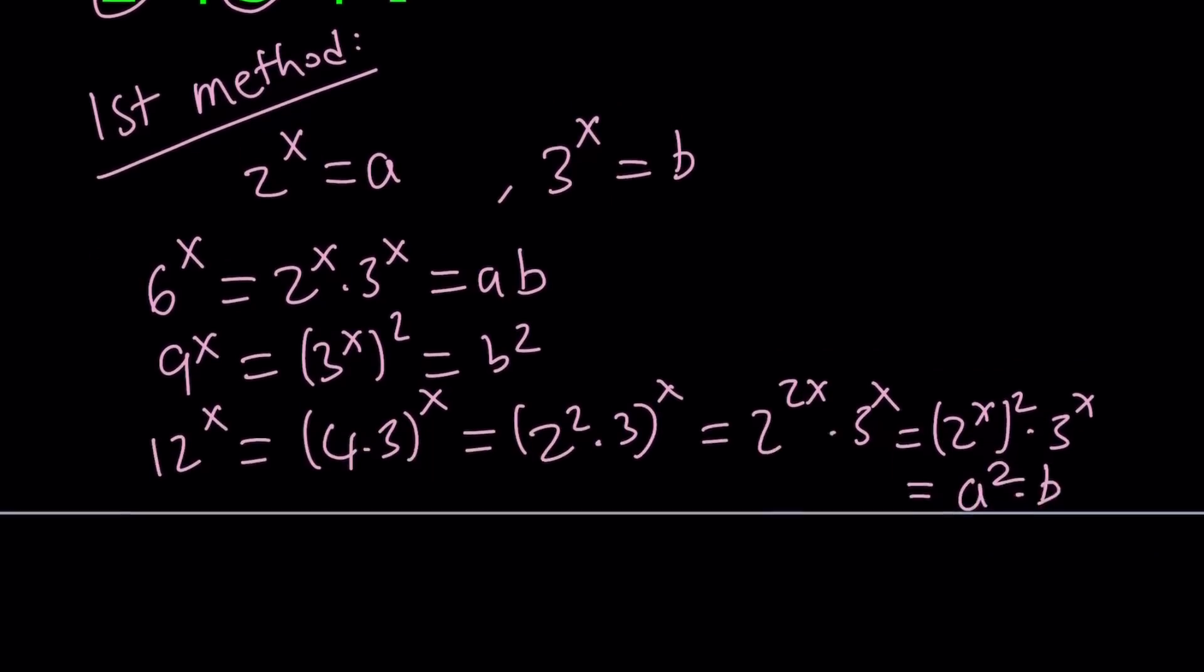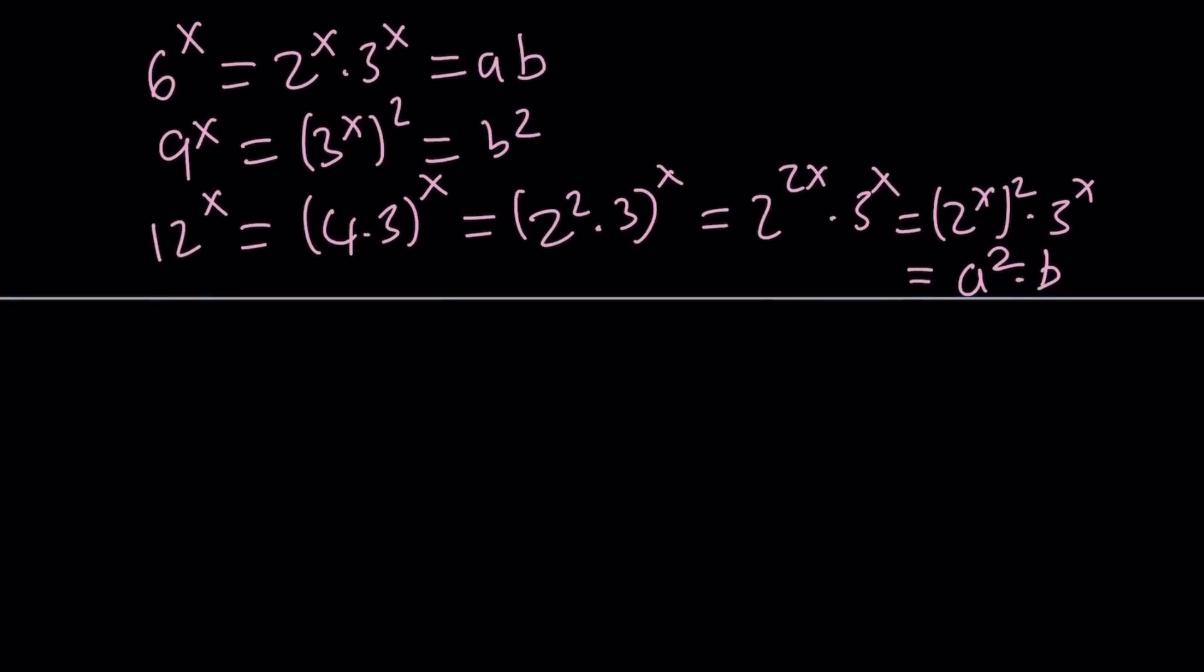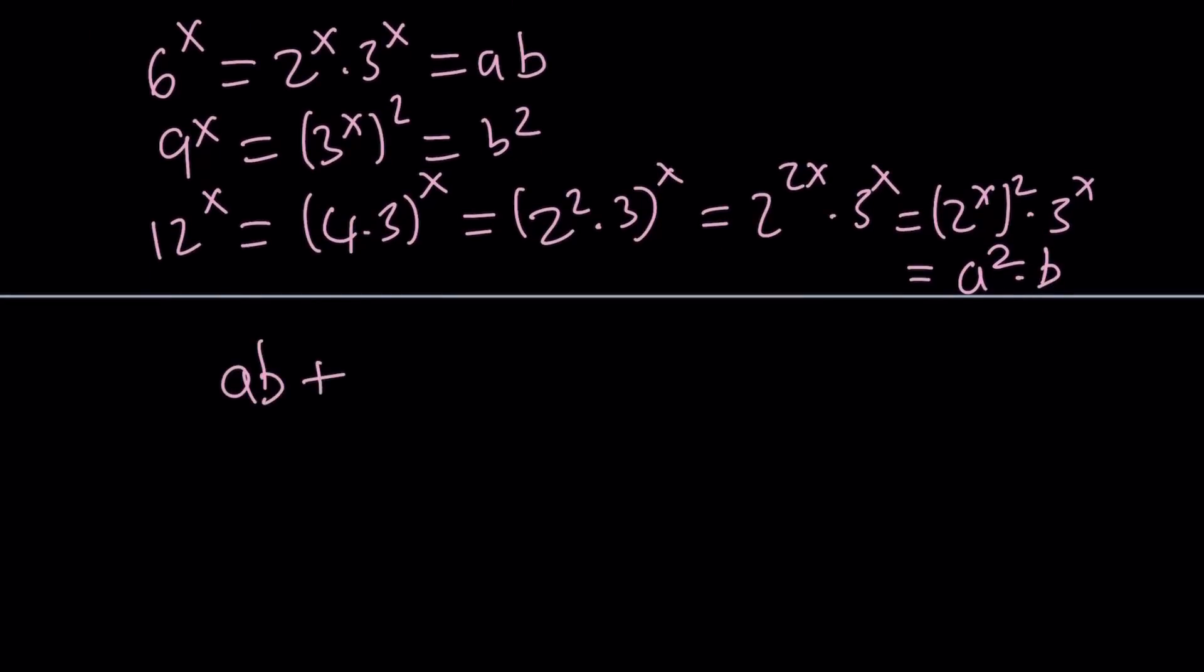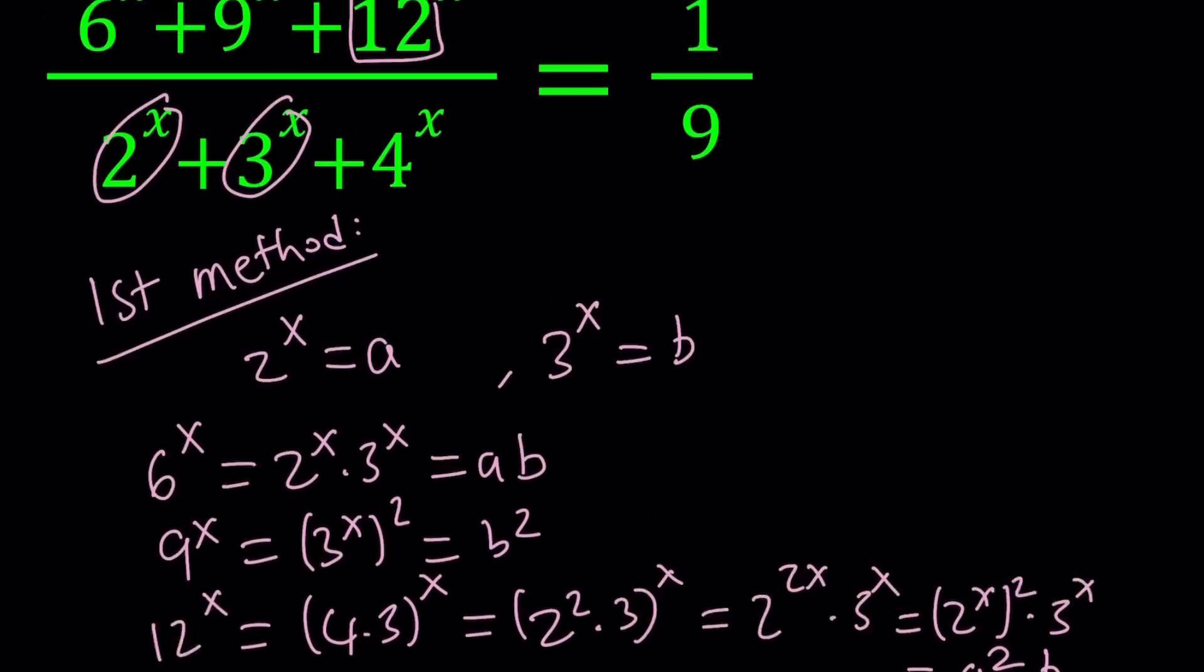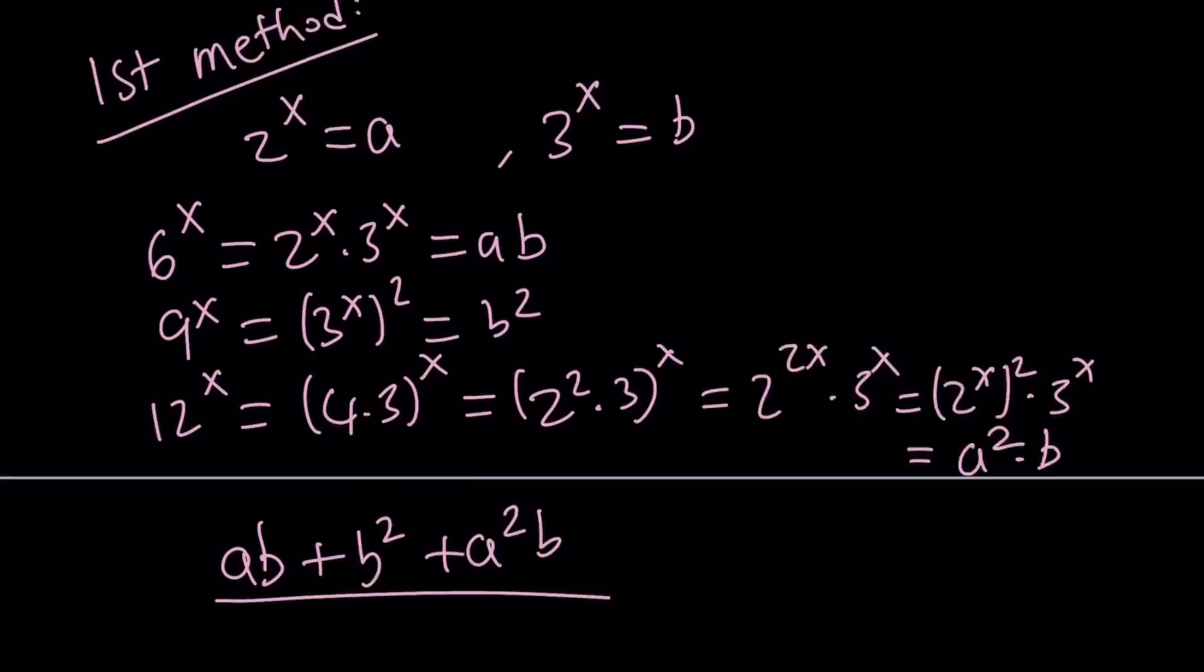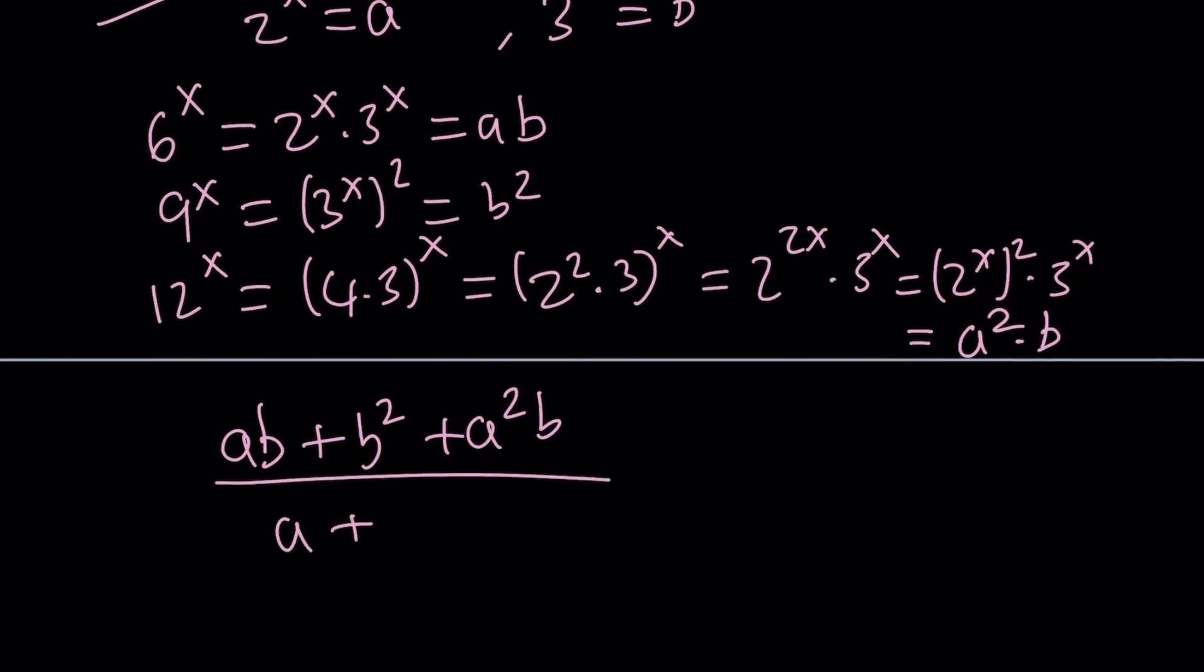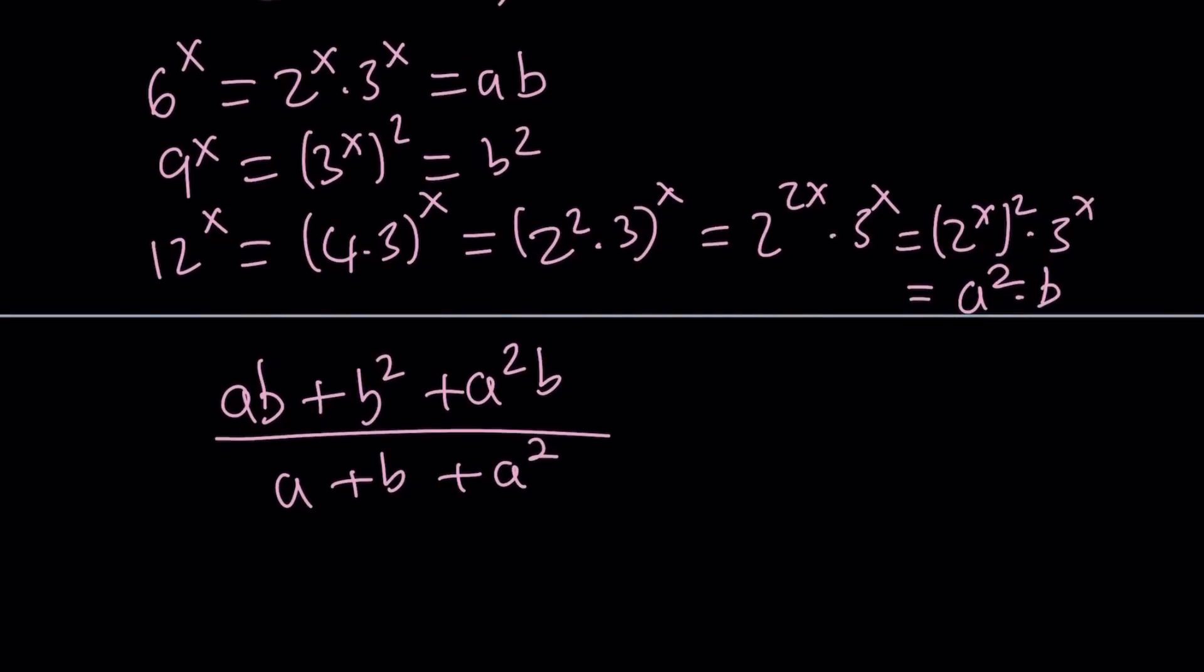So we got a name for everything. Let's go ahead and replace them and then we'll see what we get from there. So we're going to replace 6 to the x with ab and then we have 9 to the x which is b squared and then we have 12 to the x which is a squared b and that is going to be divided by a plus b plus a squared because 4 to the x is 2 to the x squared and that is a squared. So now this is equal to 1 over 9.